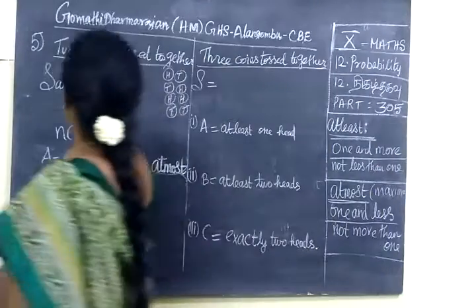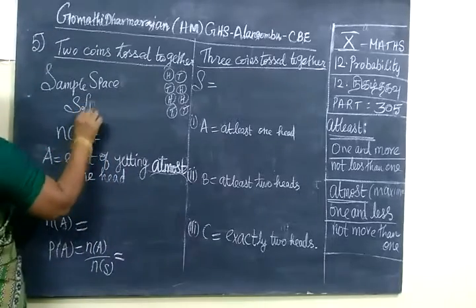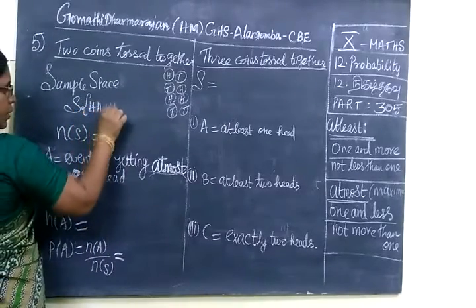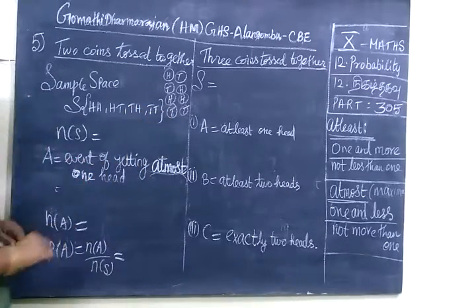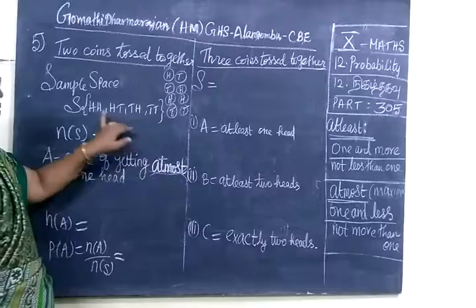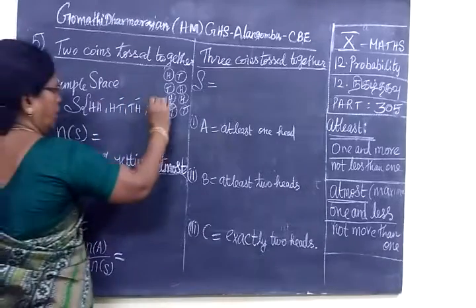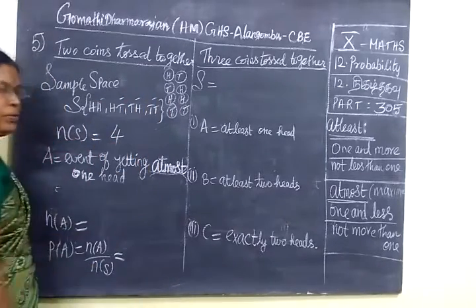So you can write the sample space in this way: H H, H T, T H, T T. So there will be no other chance. So you count it: 1, 2, 3, 4. So n(S) equals 4.